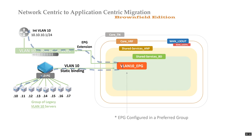Once you're happy and everything's working, you shut down the SVI on the legacy environment and enable the subnet or default gateway on the shared services bridge domain. At the same time, you map the shared services bridge domain to the WAN layer 3 out. Creating this default gateway on the bridge domain actually creates an SVI on the leaf switches — all leaf switches that are in scope.